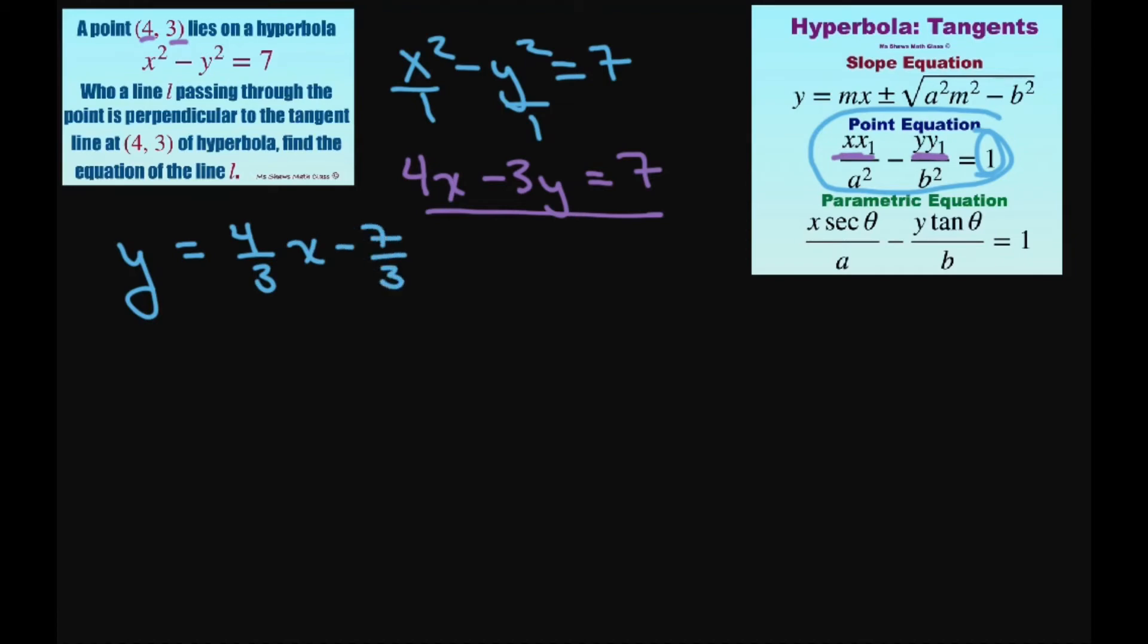Since the line we're looking for is perpendicular to the tangent line, the slope of our new line is going to equal the negative reciprocal of that. So that's going to be negative 3 divided by 4. So now we have this equation y equals negative 3 fourths x plus m.